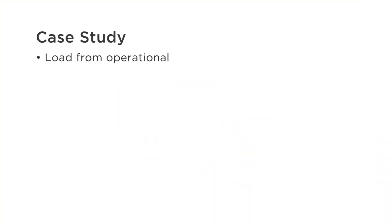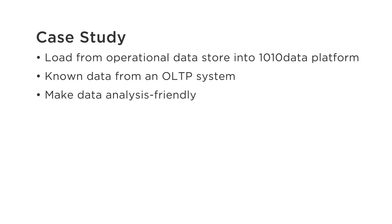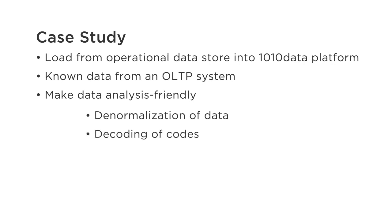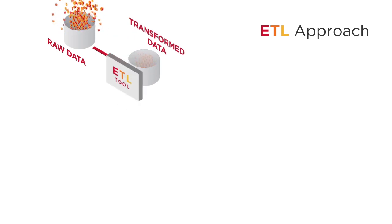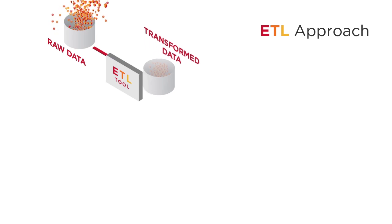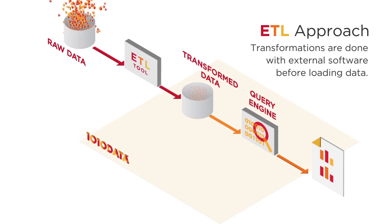Let's walk through an example. We need to load data from an operational data store to the 1010 platform. We'll use known data to cut down on investigation. The data is in good shape, as it came from a well-designed OLTP, or Online Transaction Processing System. We're aiming to make the data analysis-friendly. As small dimension tables get denormalized into larger fact tables, codes can be standardized and standard KPIs pre-computed. If the data is dirty, we may need additional transformations to clean it. Using the ETL approach, raw data flows into a transformation stage, pictured here as an ETL tool. Next, this is loaded into the 1010Data platform, which we'll use to query data for reporting. Here, transformations are done with external software before loading data.